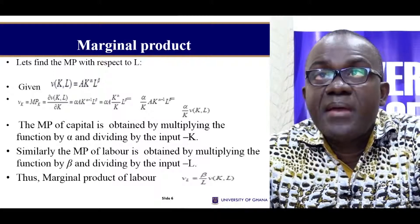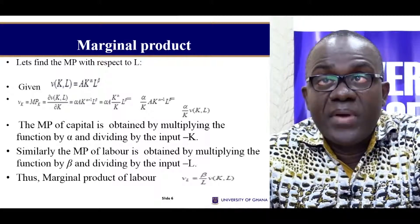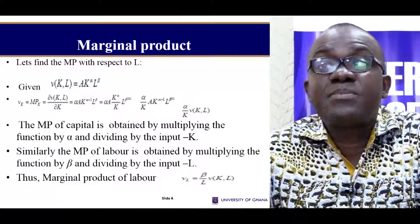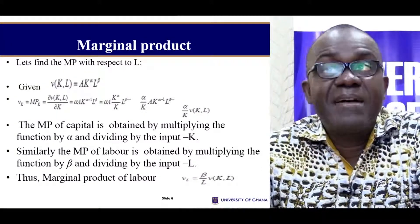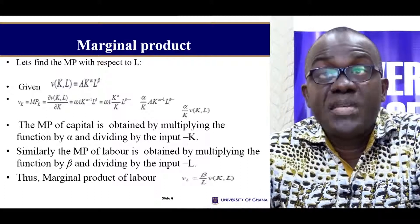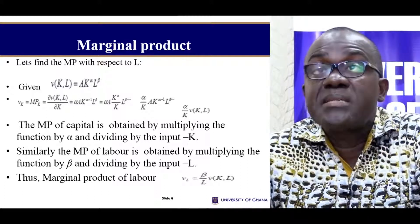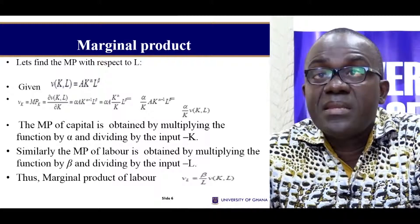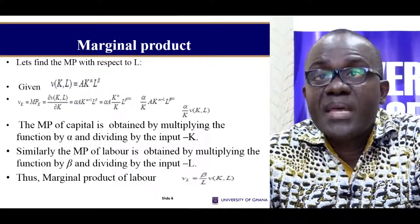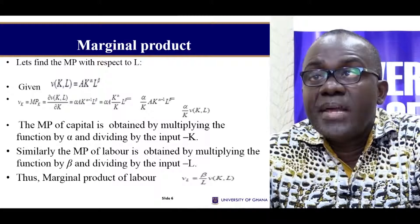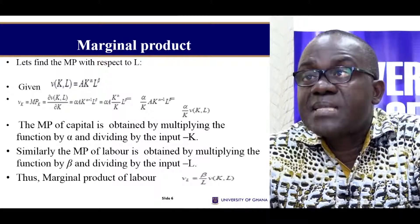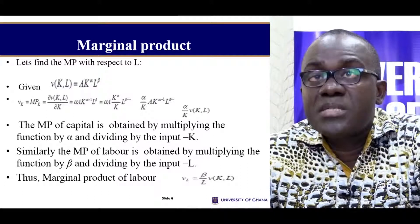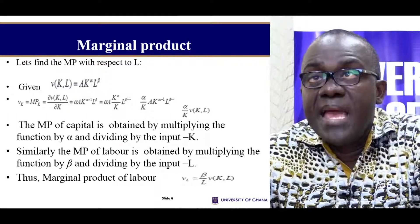Notice that what we have here is the same as the original function, so instead of repeating it we can substitute the function back in. The marginal product of capital is obtained by multiplying the function by alpha and dividing by K. Similarly, the marginal product of labor is the same function multiplied by beta and divided by L. You can convince yourself by differentiating the function with respect to L and performing the usual substitution.